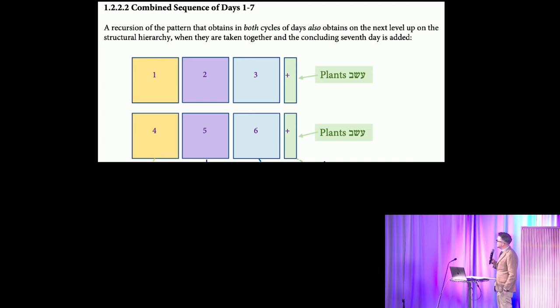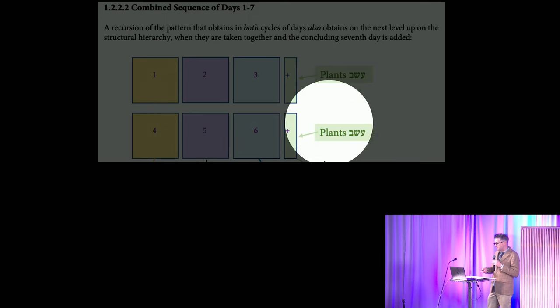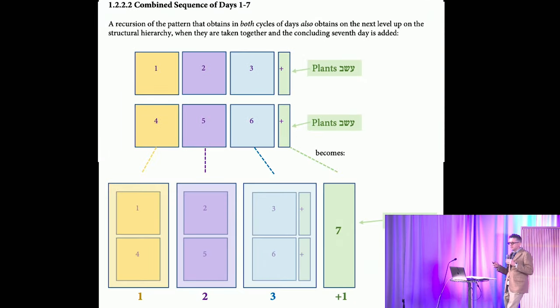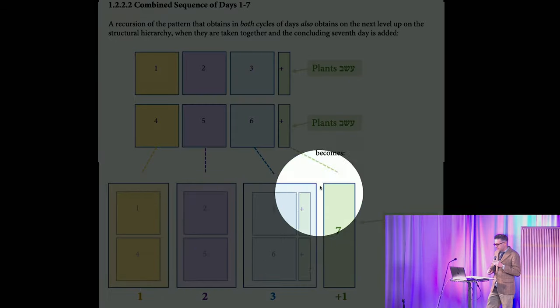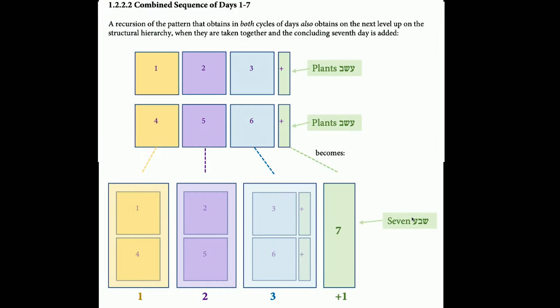A recursion of this pattern also obtains in both cycles of days. That it obtains in both cycles of days also obtains on the next level up on the structural hierarchy when they're taken together, including the seventh day. Again, 1, 2, 3 plus 1, culminating in the provision of plants, asev in Hebrew. And then 1, 2, 3 plus 1, again asev. And this occurs on the larger level as 1, 2, 3 plus 1, ending in the seventh day. Now, the term 7 and the term asev are both anagrams of one another, the same set of letters.